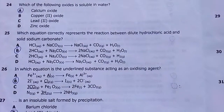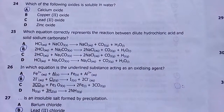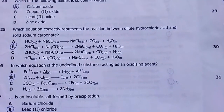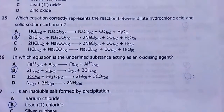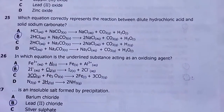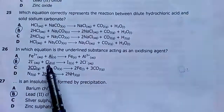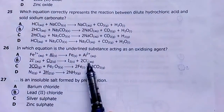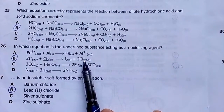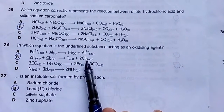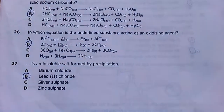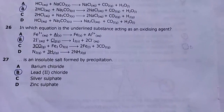Number twenty-six: in which equation is the underlined substance acting as an oxidizing agent? An oxidizing agent is the one that gets reduced. My answer is B — chlorine goes from an oxidation state of zero as an element to minus one, meaning it has been reduced. The substance that is reduced is the oxidizing agent, so my answer is B.